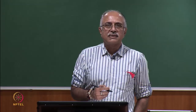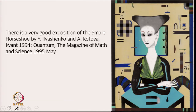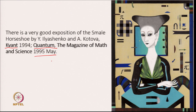For those interested in following these arguments in more detail, there is a very nice exposition of the Smale horseshoe in an article in a now sadly defunct magazine called Kvant, published in the Soviet Union and later Russia, by Ilyashenko and Kotova, translated into English in the equally short-lived magazine Quantum — the May 1995 issue. The illustration is from that Quantum magazine article.